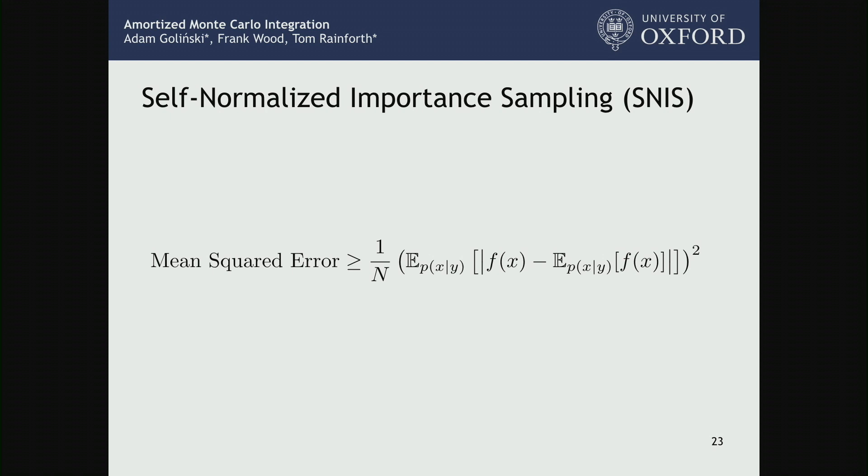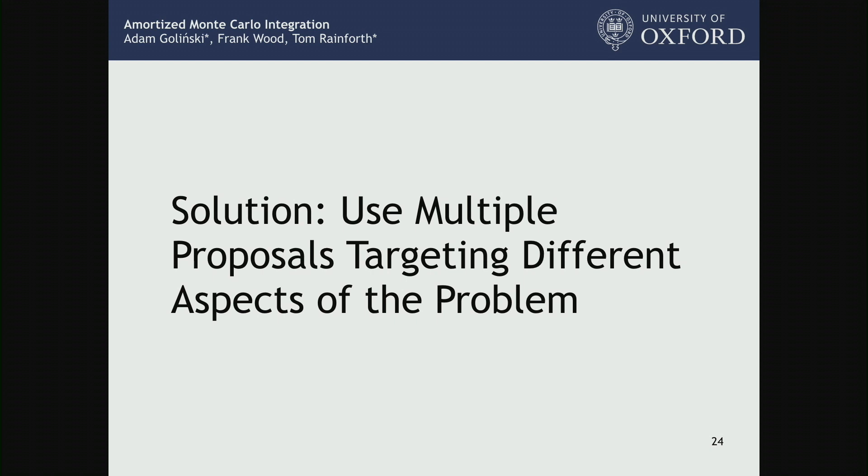The key idea of the paper is: how do we break this limit? The key idea is to use multiple proposals targeting different parts of the problem. If you remember back when I talked about importance sampling without self-normalization, that could be perfect. What we're going to do is take the problem, split it into separate different chunks, and then target those separate chunks in different ways. Each of those ways can each be perfect, and when we stitch them back together, the whole thing can suddenly be perfect and work extremely well.